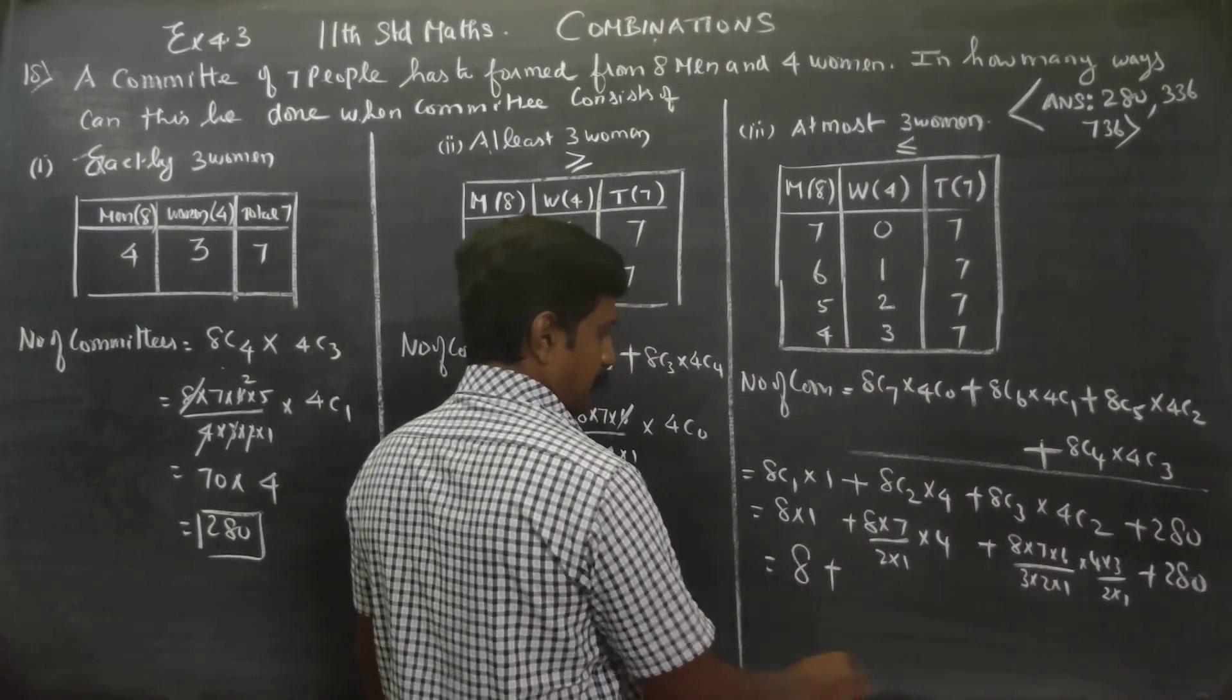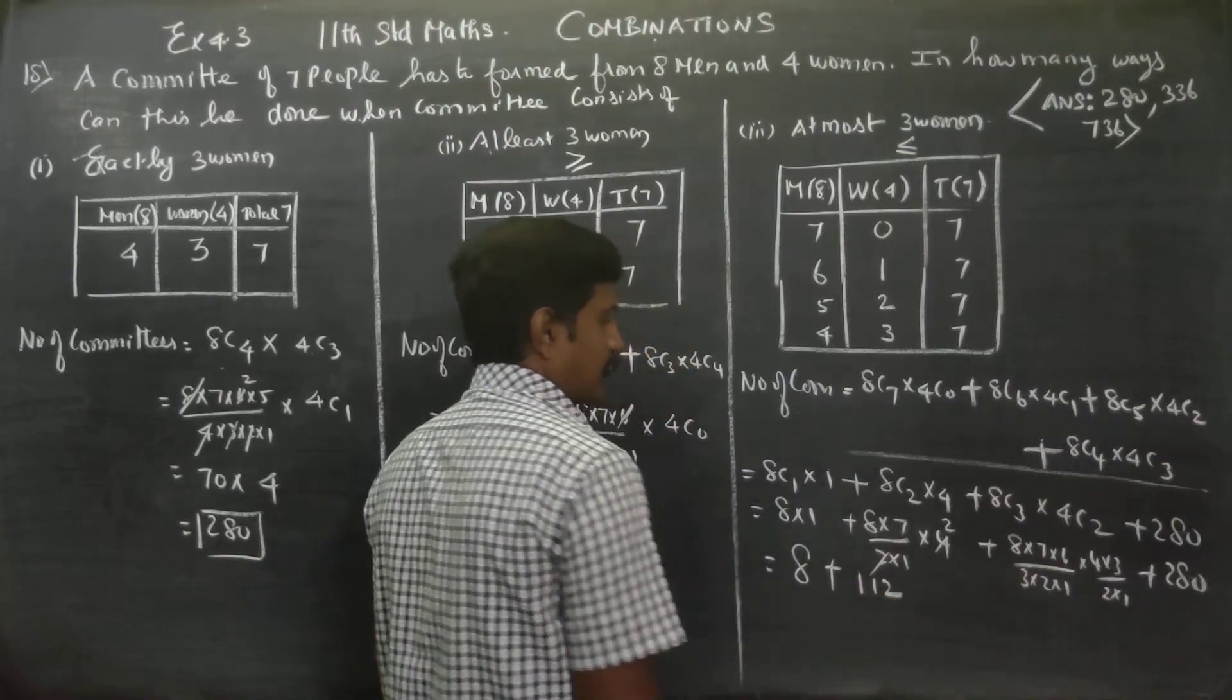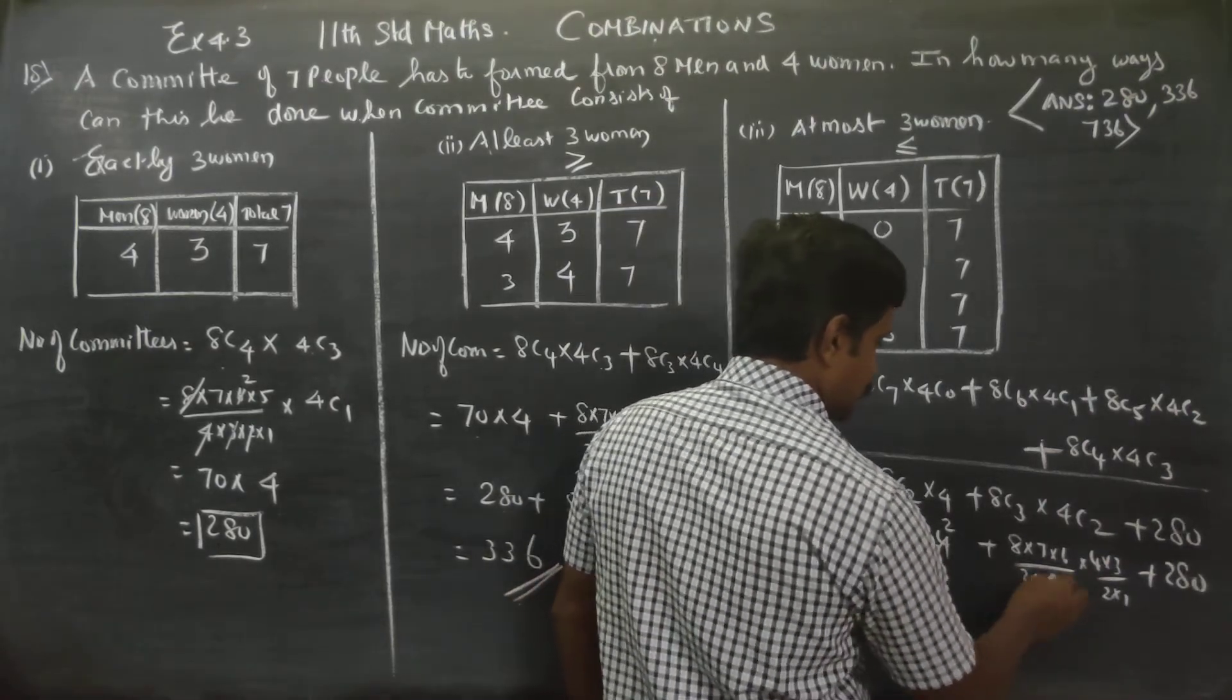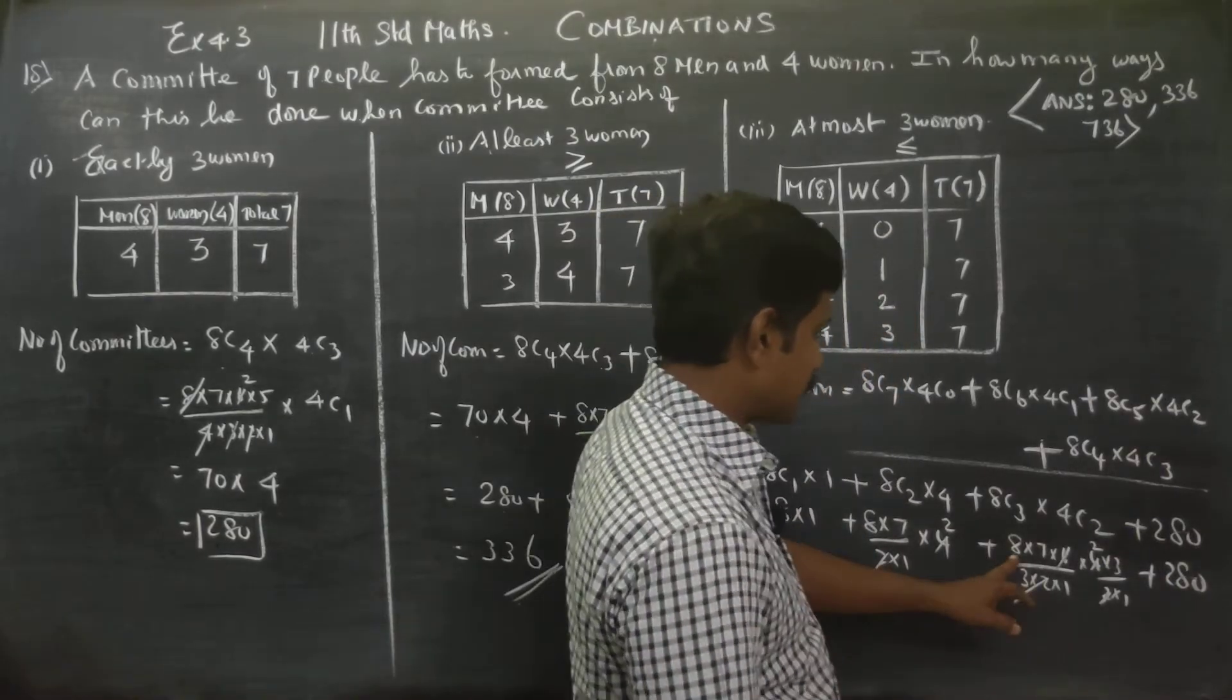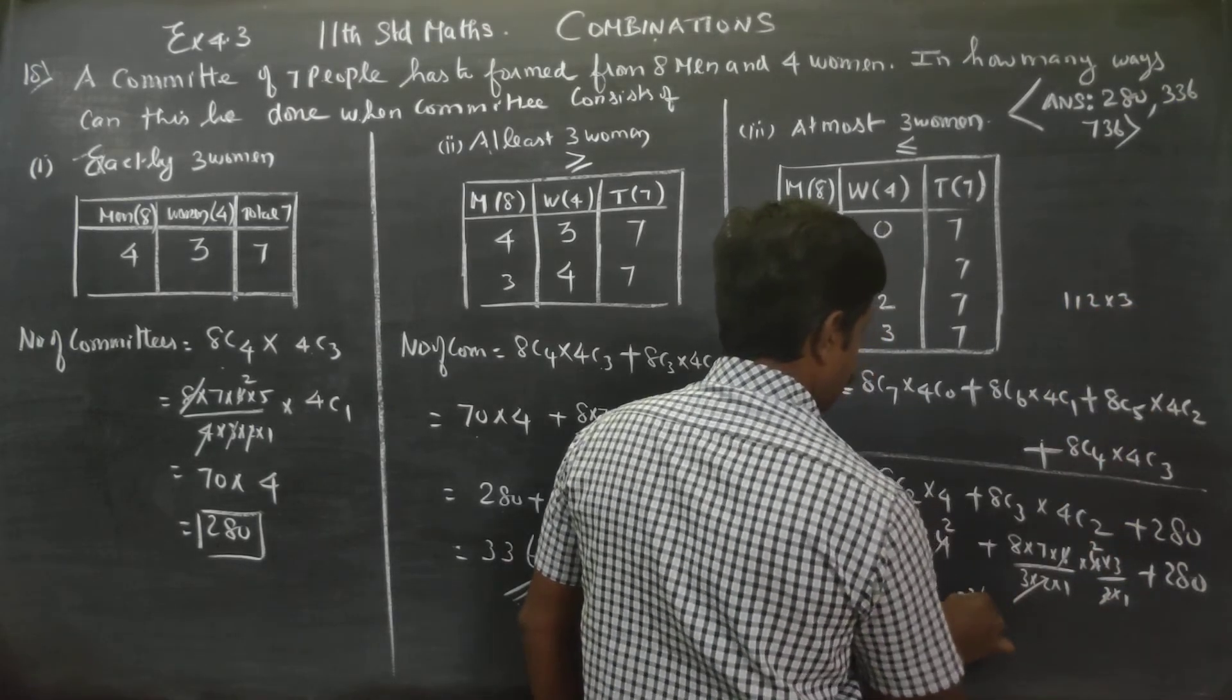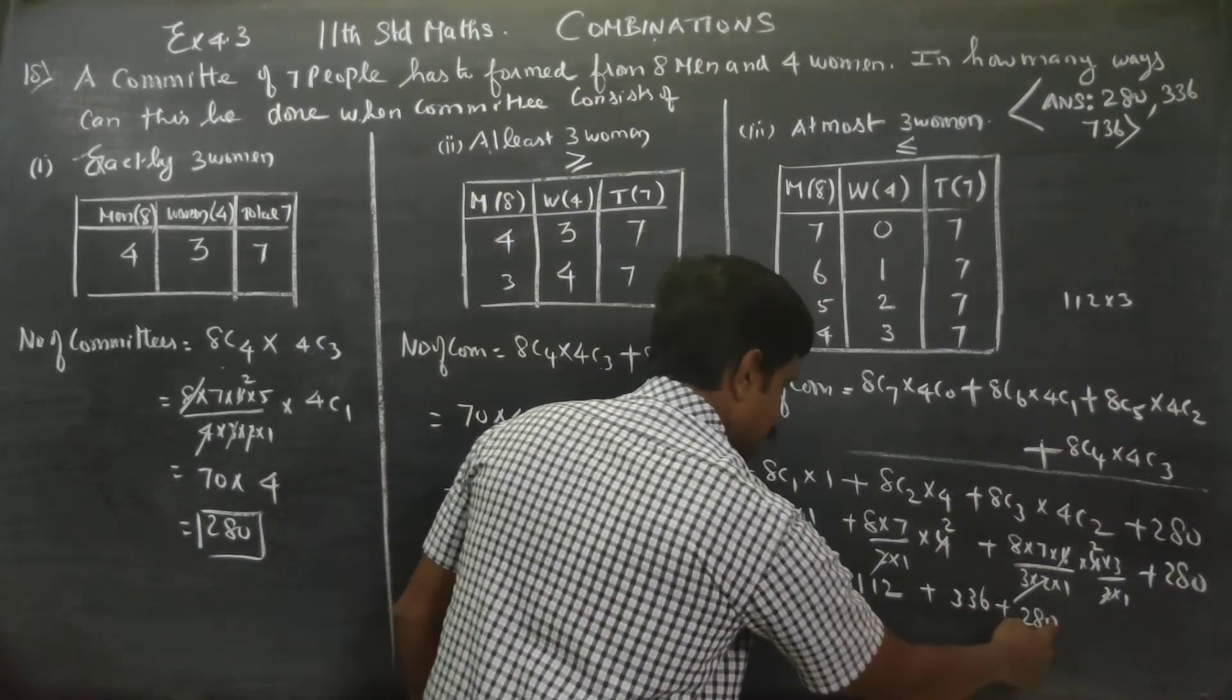8C1 is 8. Adding these: 8 plus 112 plus 336 plus 280. Starting the addition: 0, 6, 8, 8, 14, 16 carry 1.